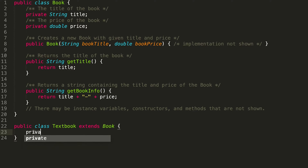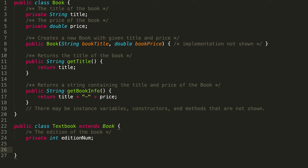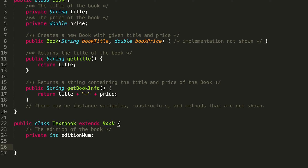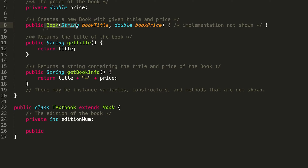Let's add that as private. This will be an int — the description references it as a positive integer. So private int, let's call it edition. We can add a comment: the edition of the book. We're also going to want a constructor for this Textbook class, just like we have one in our Book class.